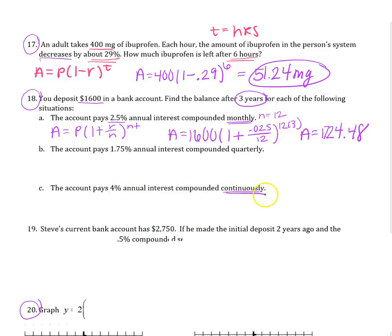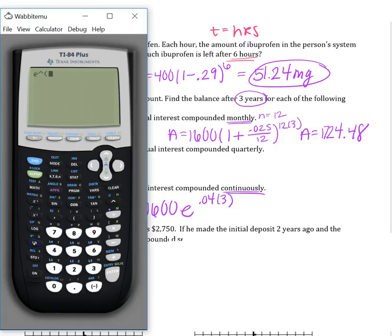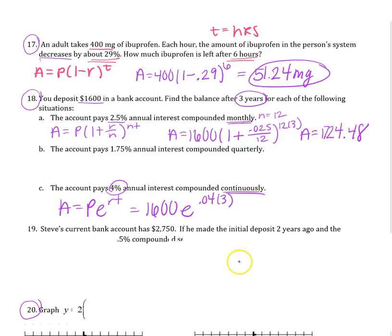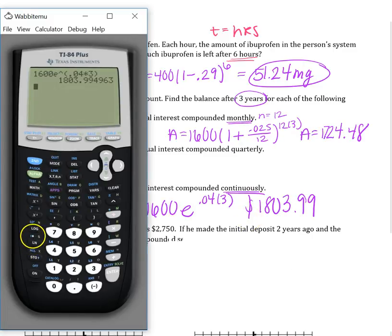For compounding continuously, the formula is a equals p times e to the rt. With $1,600 at 4% for three years: enter 1600 times e to the 0.04 times 3. Use second then ln on the calculator to access e to a power. The result is approximately $1,803.99.